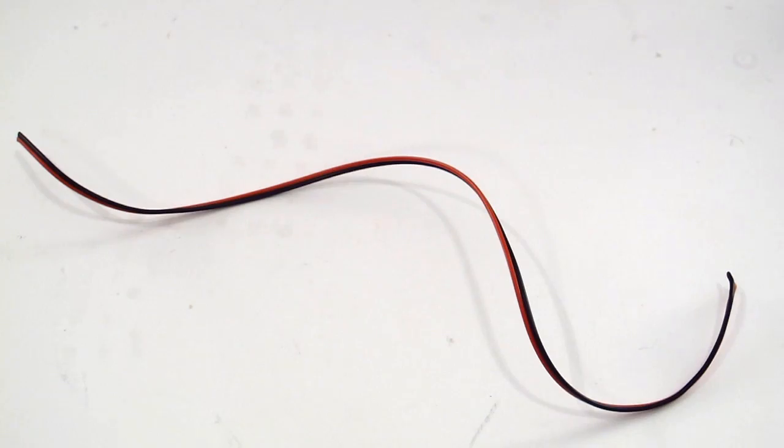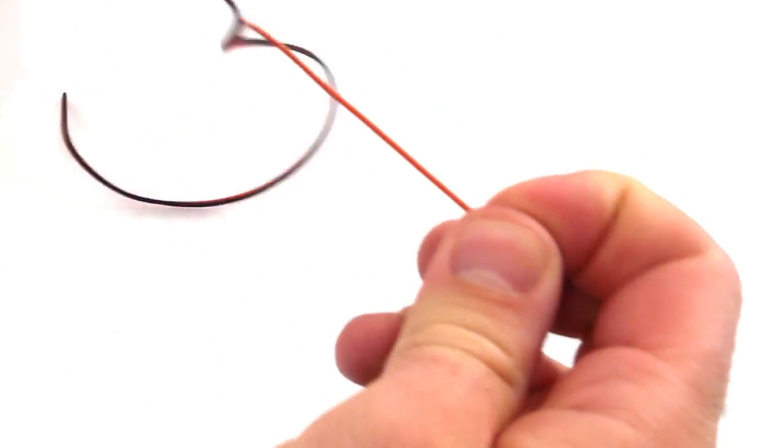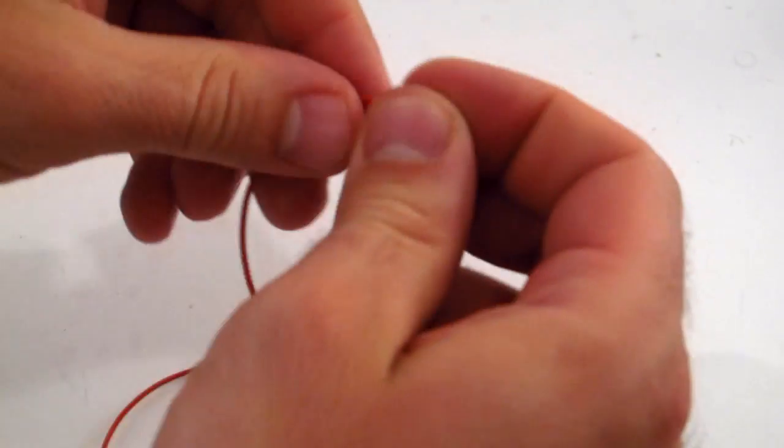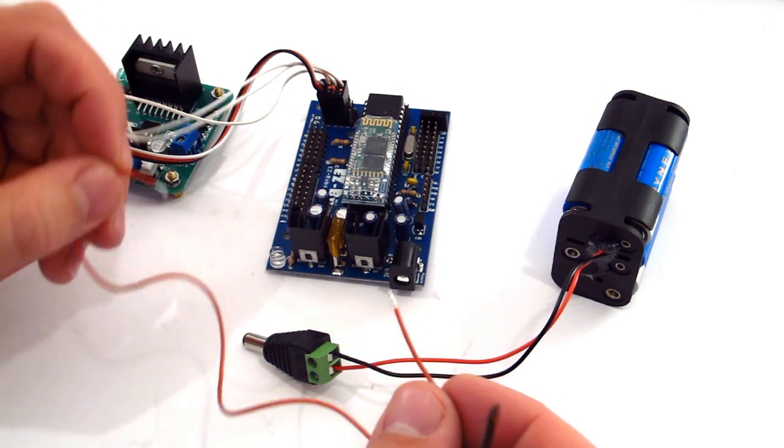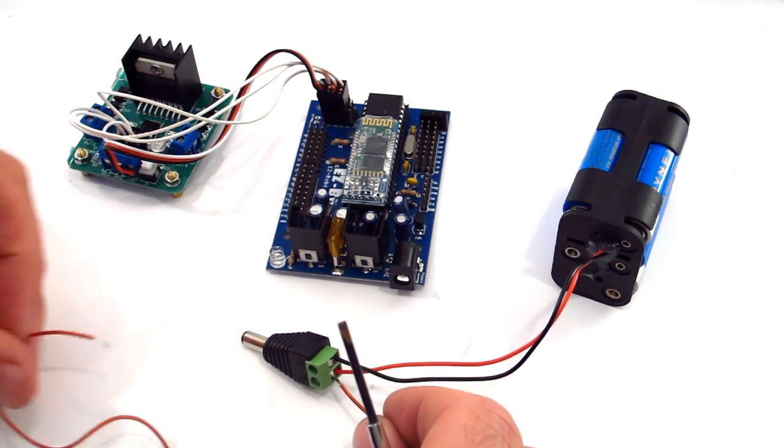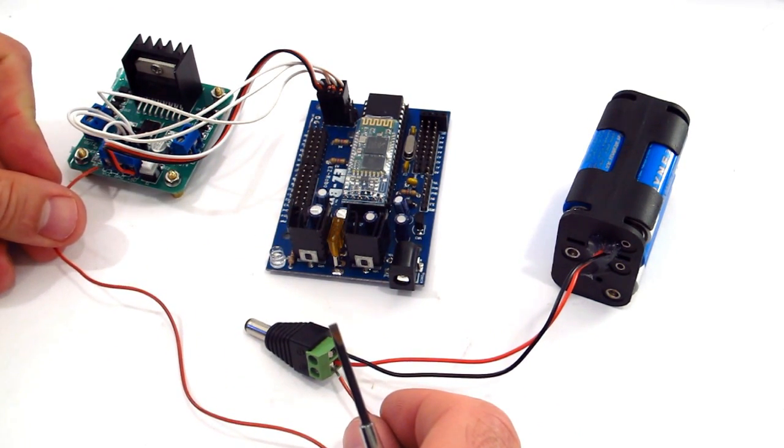Using one of the red and black cables that you kept from the beginning of this video, separate the two wires and just keep the red. You're going to use this wire to connect from the positive from the battery to the VCC on the motor controller.